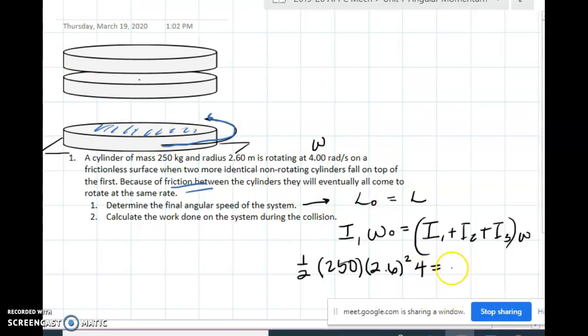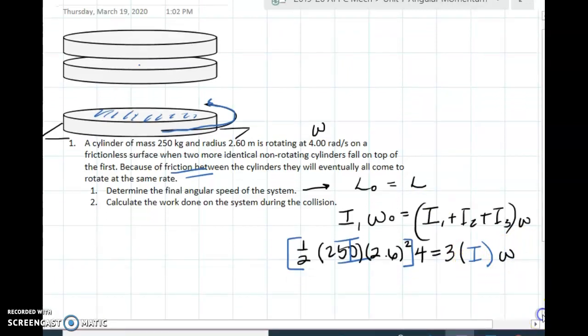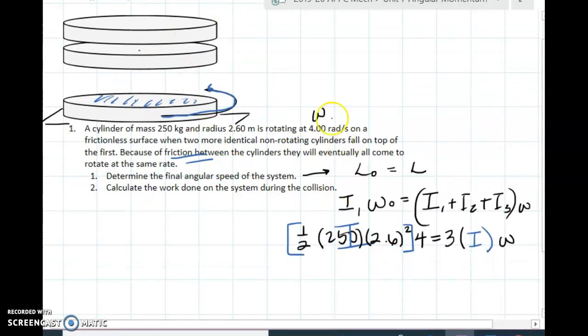All three of these are identical, so this would be three times, oh wait a minute, that is just I, right? Three times, that's the goal. It's going to cancel out. So if this was all just I, and this is three times I, and then this would be, well, omega. So then I don't have to worry about any of that calculation. It would just be I times 4 is equal to 3 I times omega.